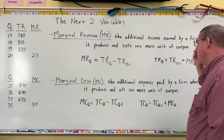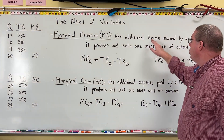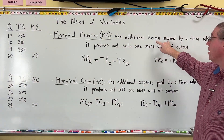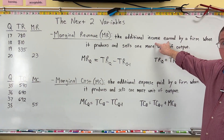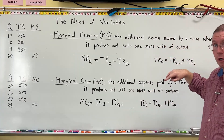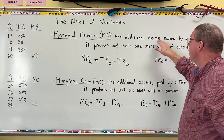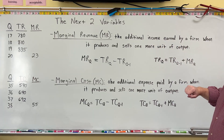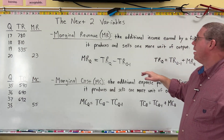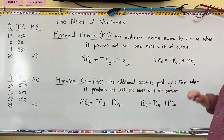So let's define marginal revenue. Marginal revenue is the additional income earned. Income earned is total revenue — all of the income earned is total revenue. This is the additional income earned by a firm when it produces and sells one more unit of output.